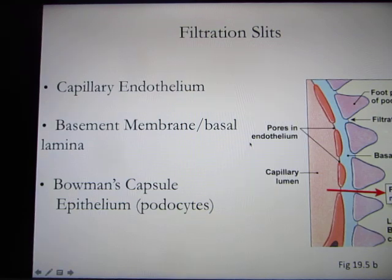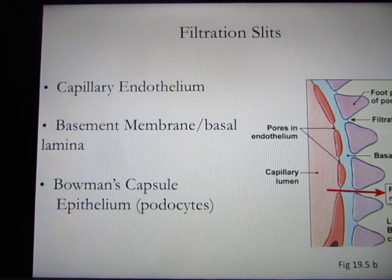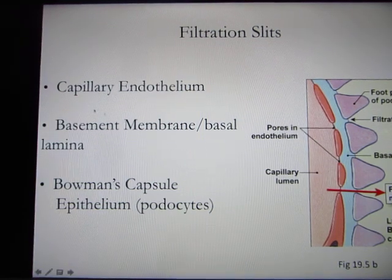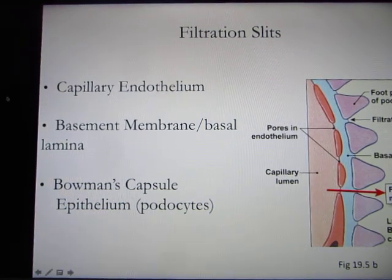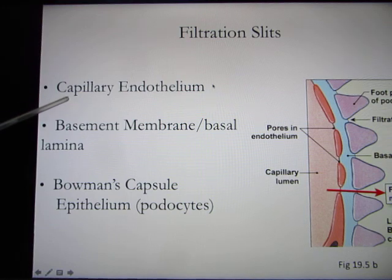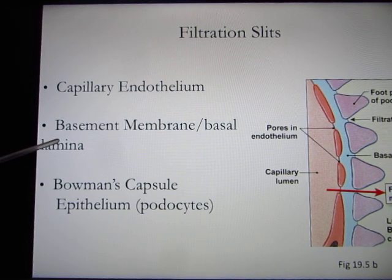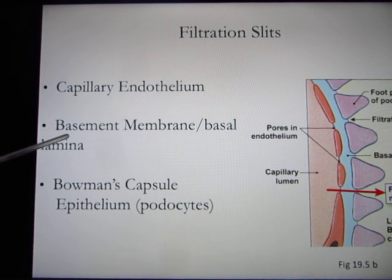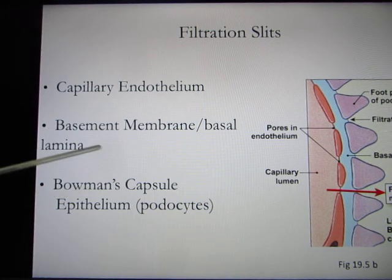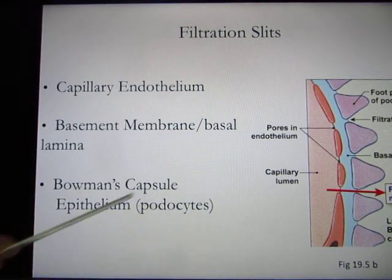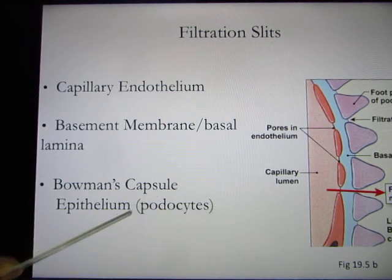So the filtration slit has three layers: the capillary epithelium, the second layer is the basal lamina (also called the basement membrane) with negative charge to prevent protein going through, and the third layer is the podocytes.